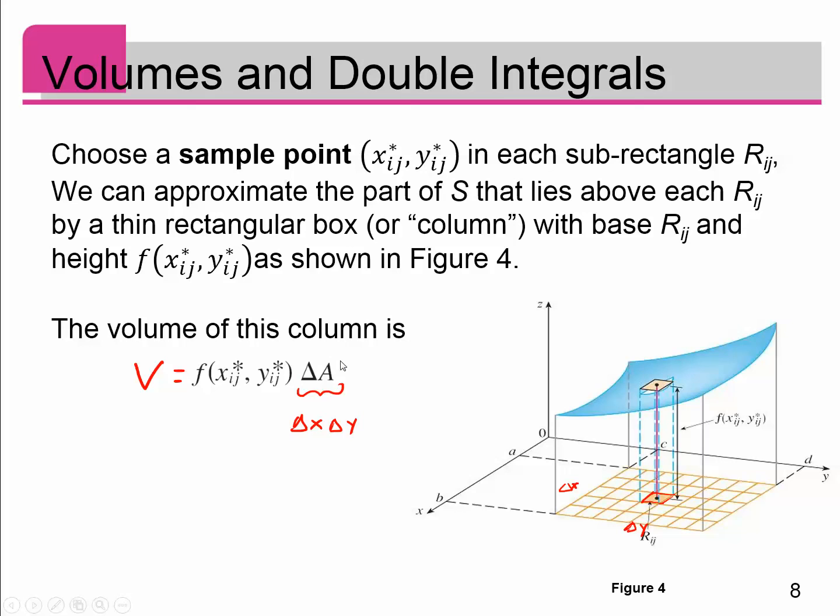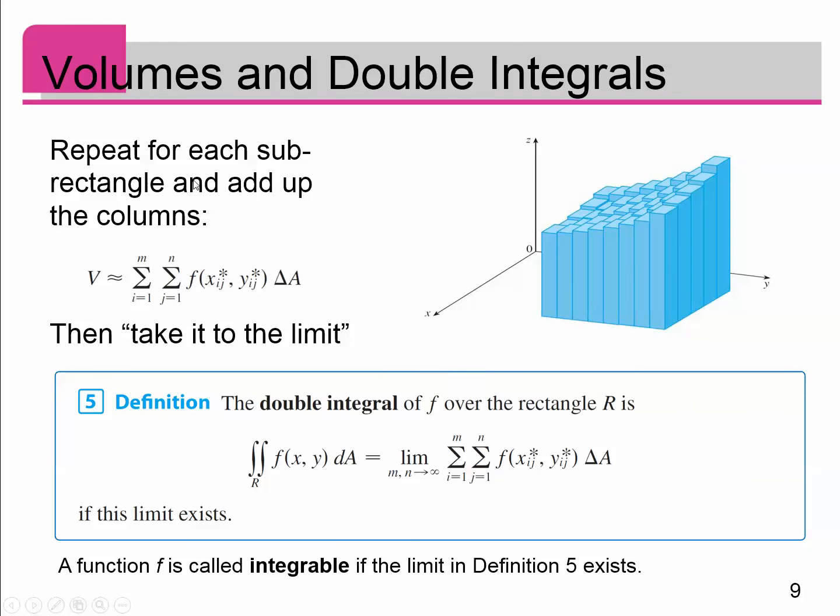So the volume of that vertical column is the function at my test point times the area of the base. So then, to find a volume underneath the whole surface, we add up all of those rectangles. So you take it to the limit. You repeat for each one, and you get all these rectangles, and you add them up. You add them up in the x direction and then the y direction. So over all m and n of them, you get this volume.